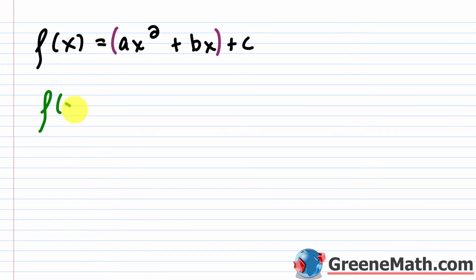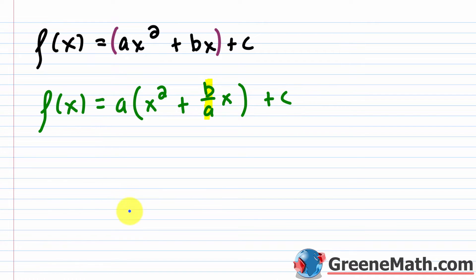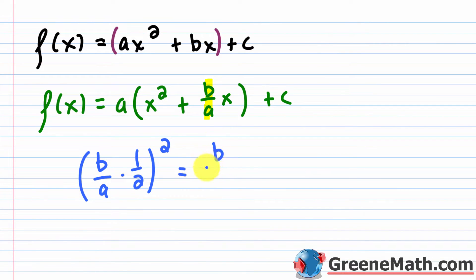So we write f of x is equal to a times the quantity x squared plus b over a times x, and then plus c. When completing the square, you look at the coefficient of x to the first power — in this case b over a — and you cut it in half, meaning multiply by one half, and then square it. So that's b over a times one half, squared, which gives b over 2a, squared.